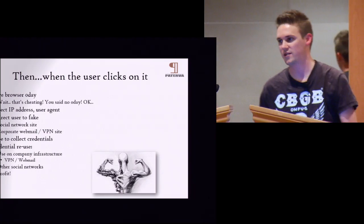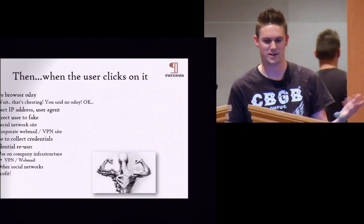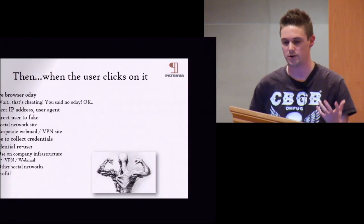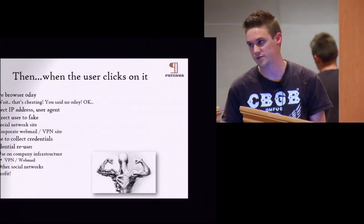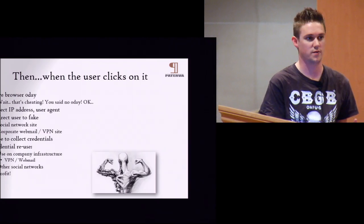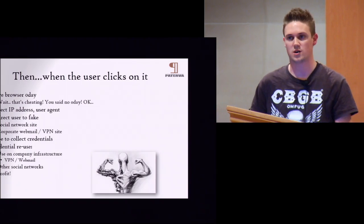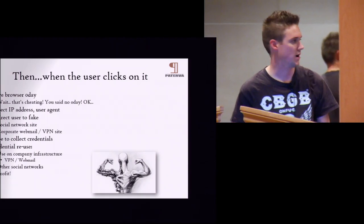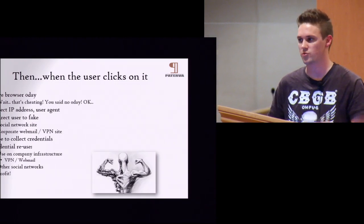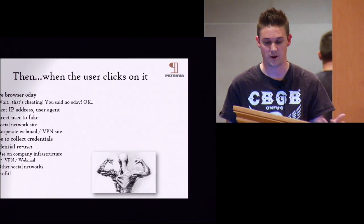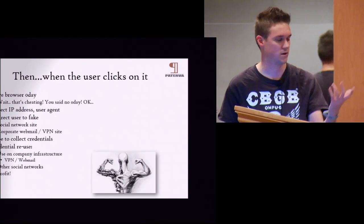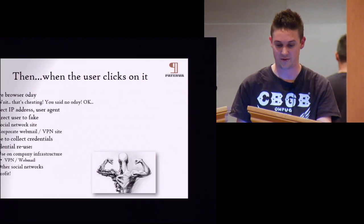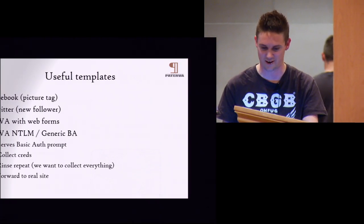Obviously you wait for the user to click on it, then you serve them zero-day, compromise the machine, and you've won — that's the best result you can have. But we said no zero-day. We're targeting an organization without any zero-day. So we do a bunch of things: we collect IP address and user agent — that gives us a lot of info about where they're coming from. If I want to target them again, I can say 'oh, your Firefox is out of date, you need to update it here.' I redirect the user to a fake account where they log in — and I'm looking for credential reuse, which you see a lot in the big breaches.